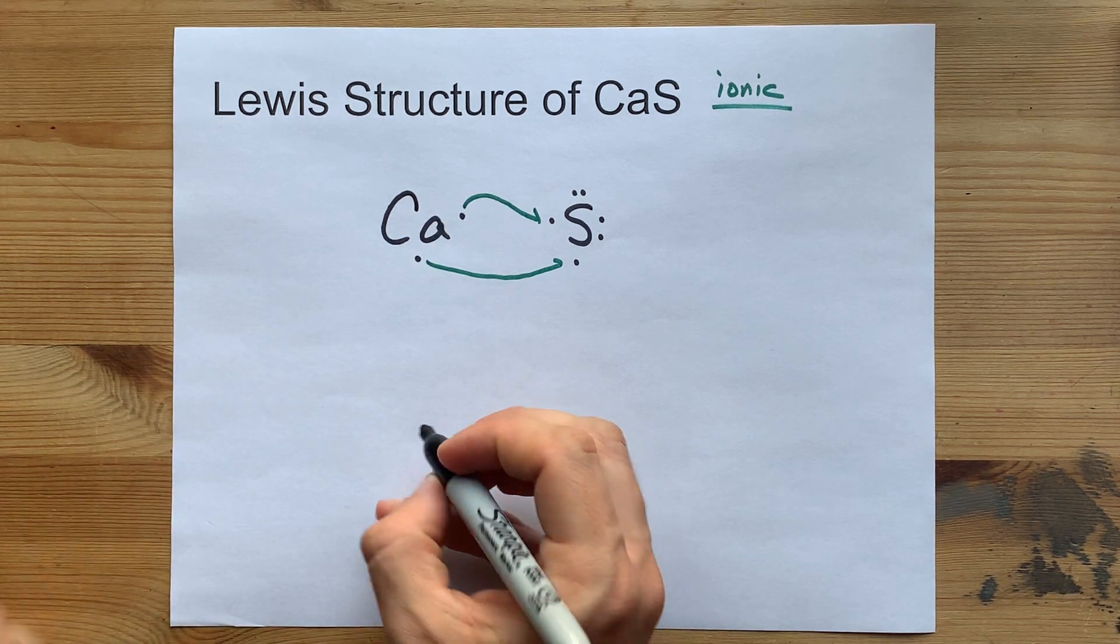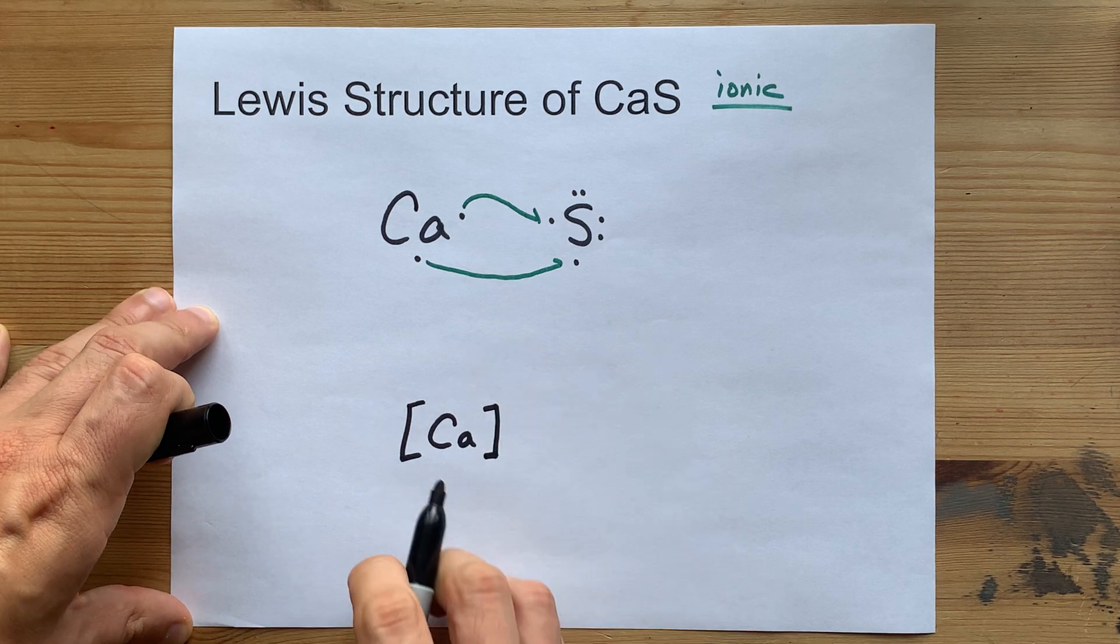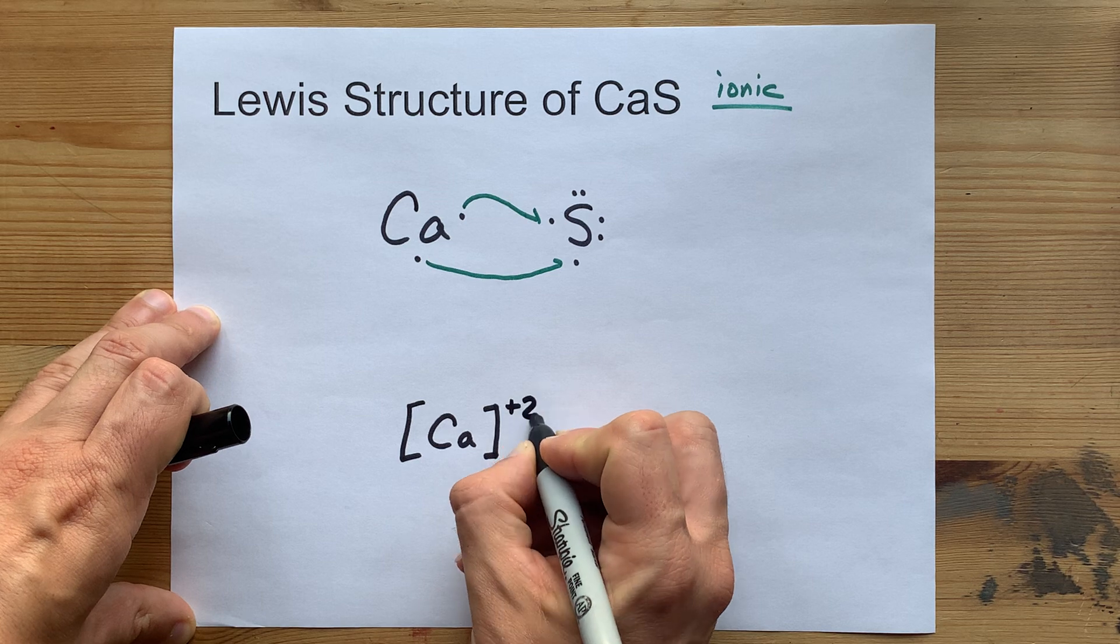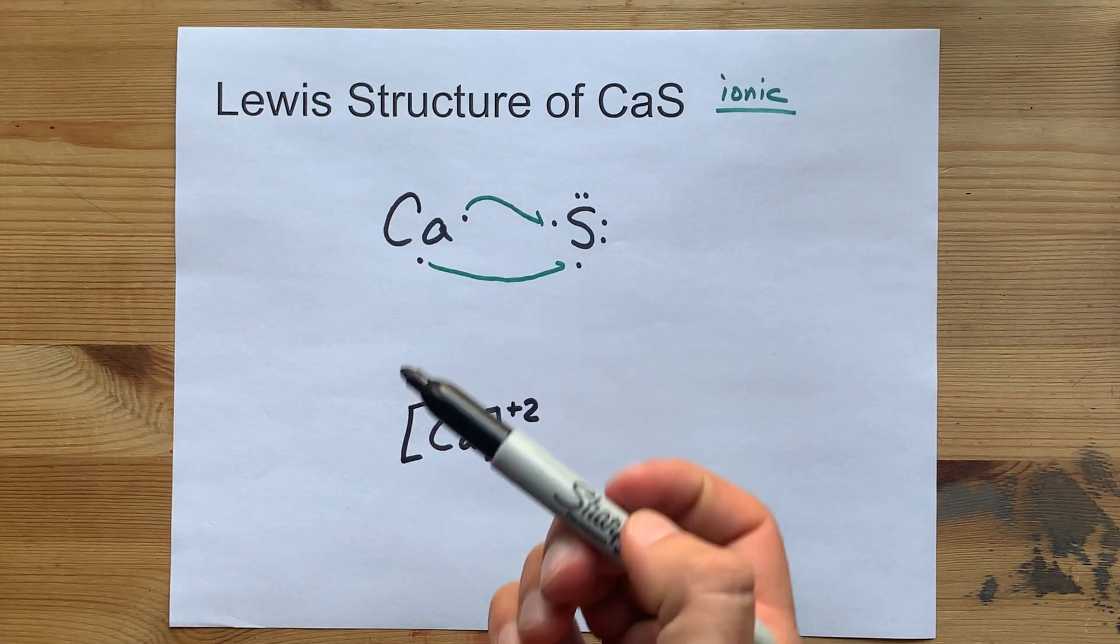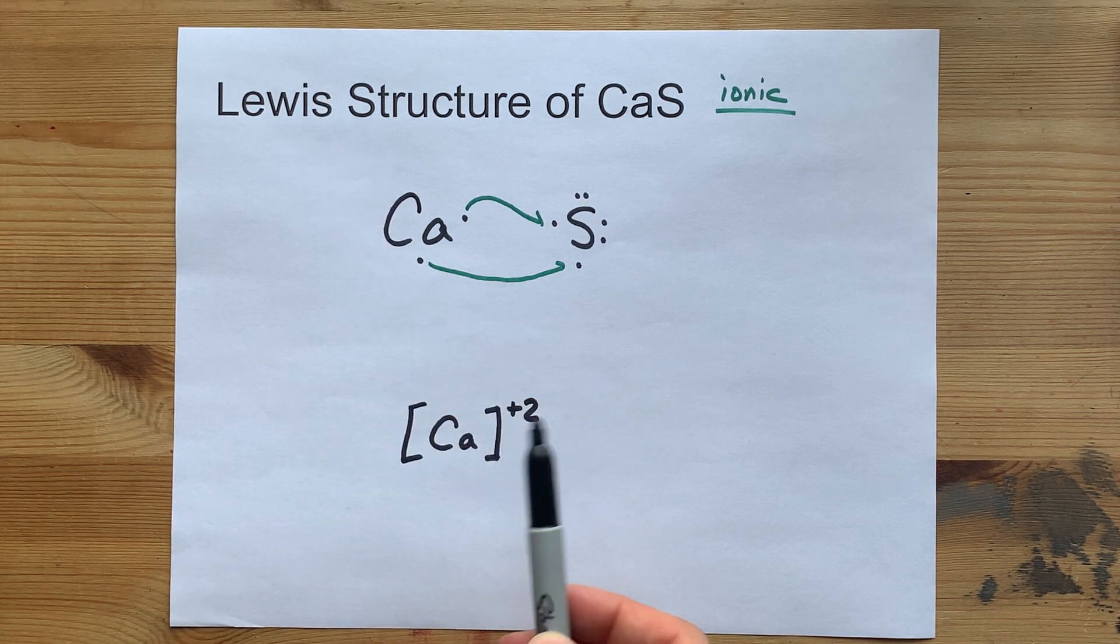Calcium will have no electrons left in its valence shell. So just draw the Ca with no dots. It has a plus two charge because it gave away two electrons. And the way we show charged particles in a Lewis structure is with square brackets.